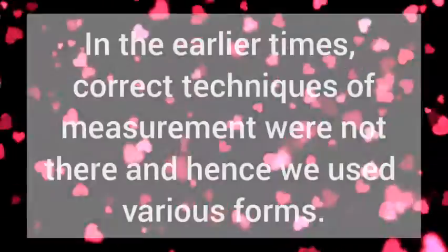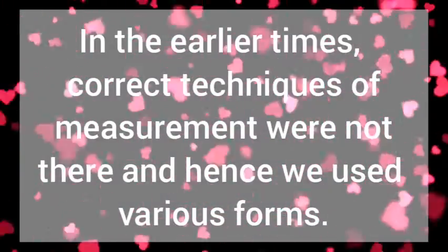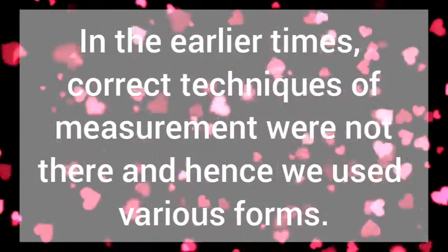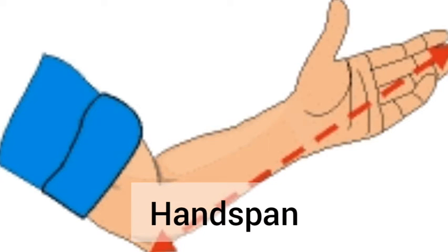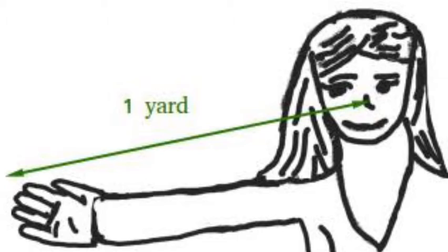Now, we are starting measurement. In the earlier times, correct techniques of measurement were not there. And hence, we used various other forms of measurement. Like, this is a hand span. Similarly, one yard. This is a yard.